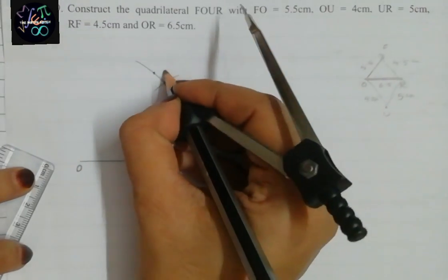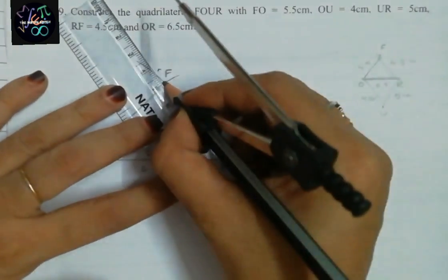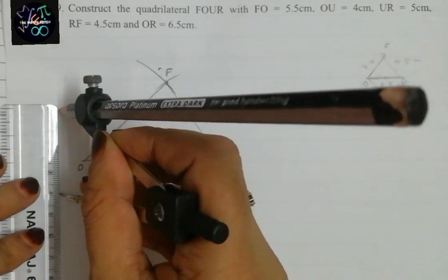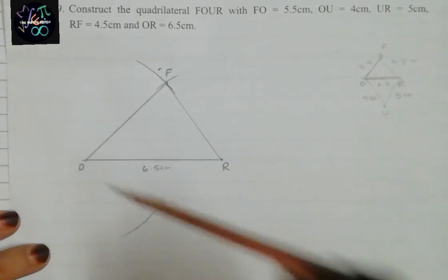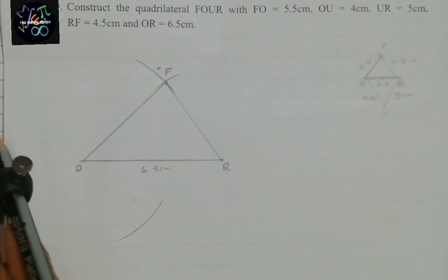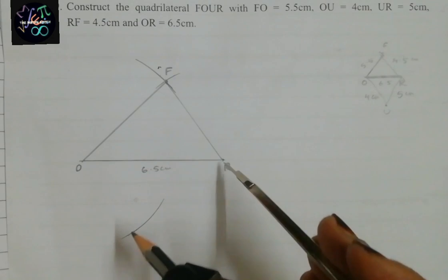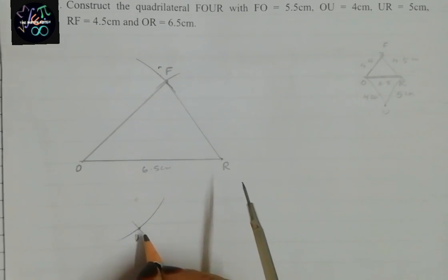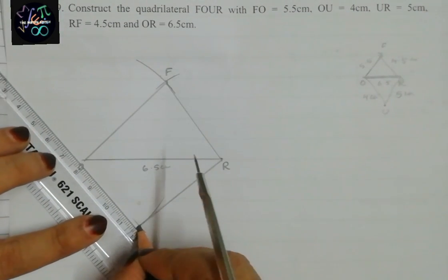We join O to F, and F to R. Next, from O we draw OU as 4 centimeter — draw one arc. Then from R, UR is 5 centimeter — measure exactly 5 cm, keep on R and cut the previous arc. This point is U, and we have got the required quadrilateral FOUR.